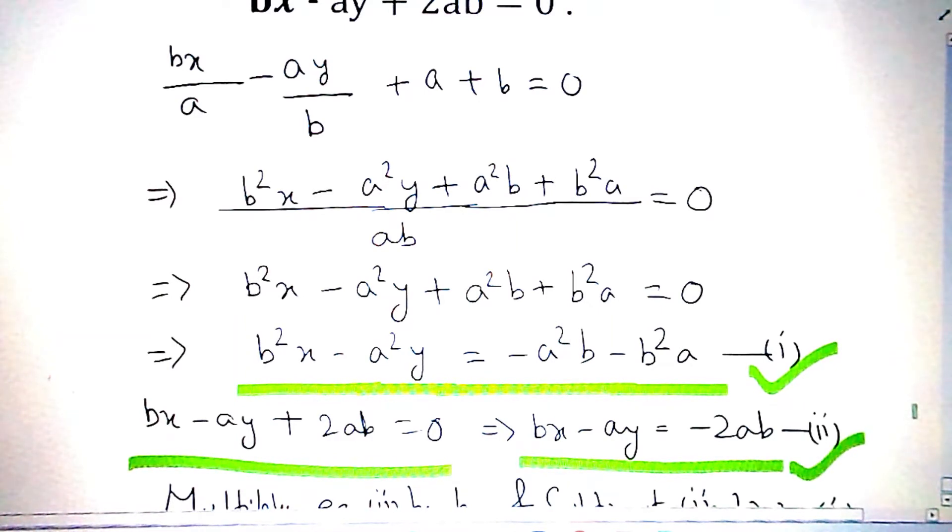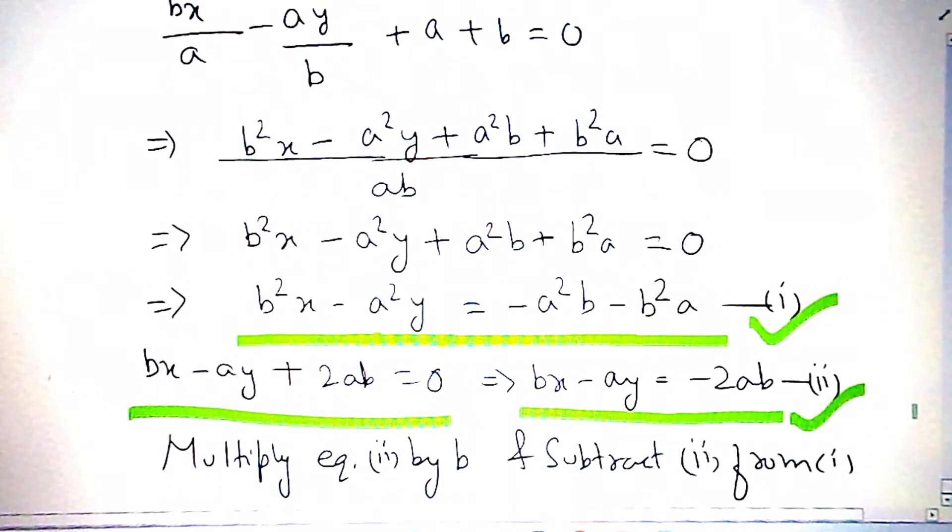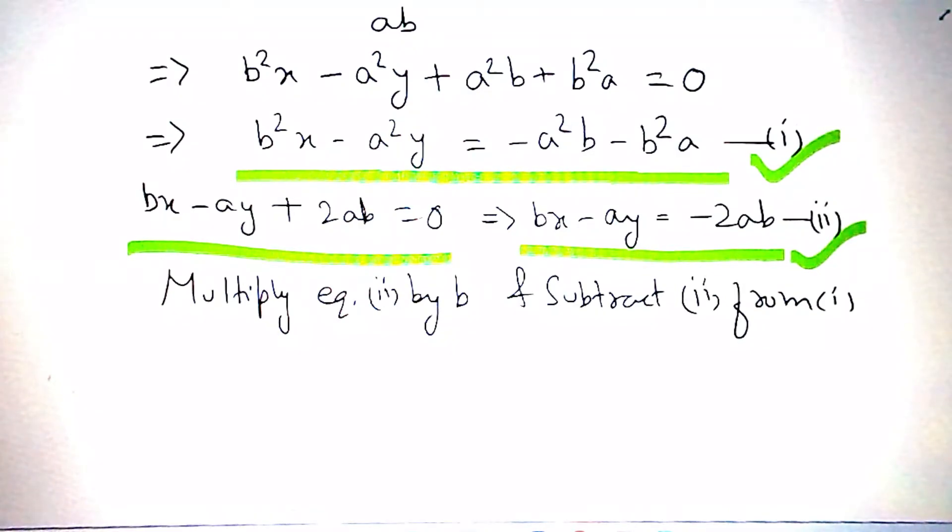Now by elimination method, multiply equation 2 by b and subtract 2 from 1. Then we get b²x - a²y = -a²b - b²a. On multiplying equation 2 by b, then we have b²x - aby = -2ab².